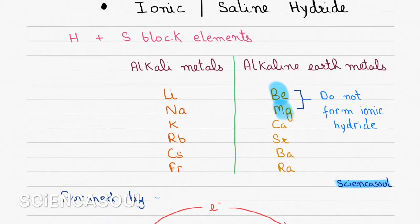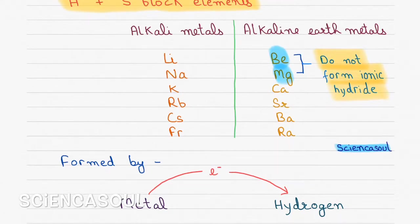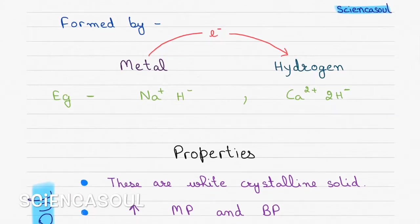First case is ionic or saline hydride. When hydrogen combines with s-block elements, then these hydrides are formed. S-block elements include alkali metals and alkaline earth metals, but exceptions lie everywhere. Here also, beryllium and magnesium do not form ionic hydride. These types of hydrides are formed by the transfer of electrons from metals to hydrogen atom, that's why they contain hydrogen as H minus ion, as you can see in sodium hydride and calcium hydride.